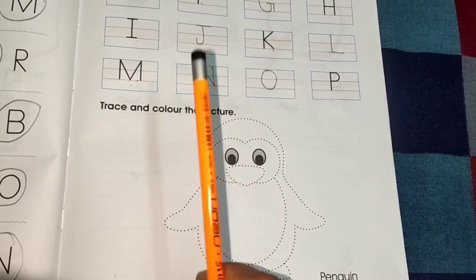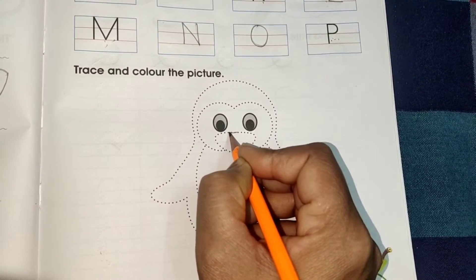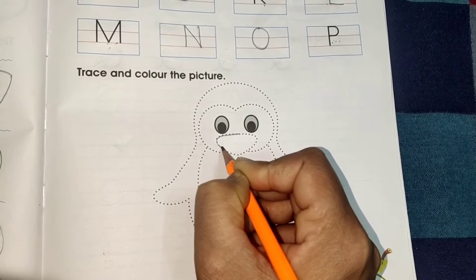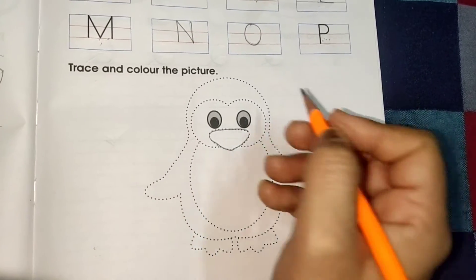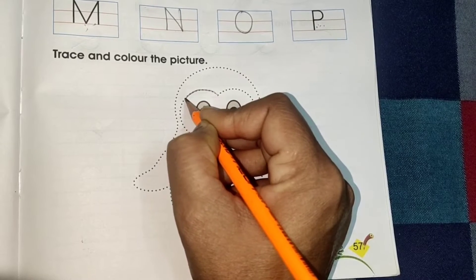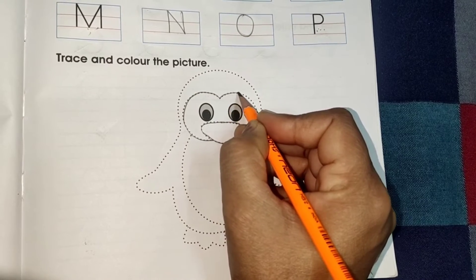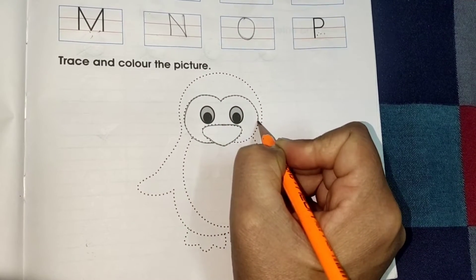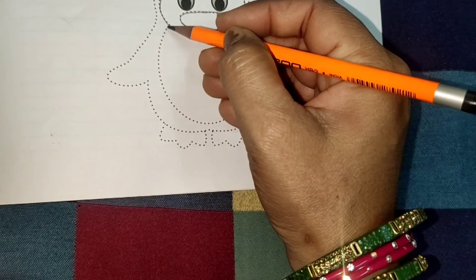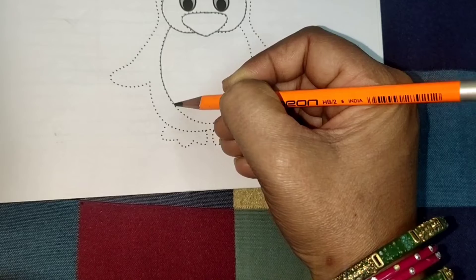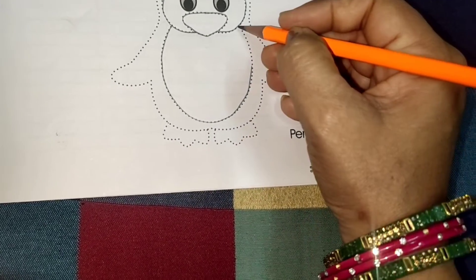So, aapko yeh jo dots diye hue hai, is ke upar kya karna hai pehle? Is tarah se saare dots ke upar, yeh dekho. Penguin ko tracing karna hai. Okay. Tracing karke, pehle hum penguin draw karengi. And uske baad penguin ko kya karengi? Color karengi.